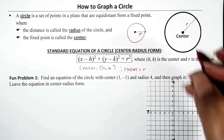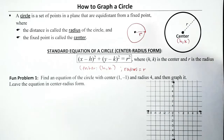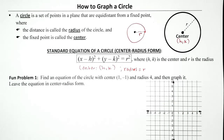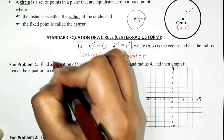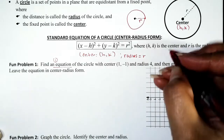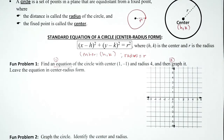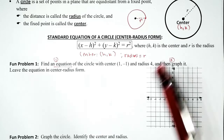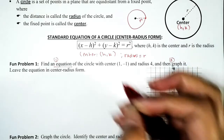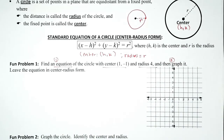The center is given by (h, k) and r represents the radius. Fun problem number one: find an equation of the circle with center (1, -1) and radius 4, then graph it. We need to do two things: find the equation and graph it. We'll graph it first — you don't need the equation to graph. To graph a circle you need two pieces of information: the center and the radius. We have both, so we have all the ingredients.